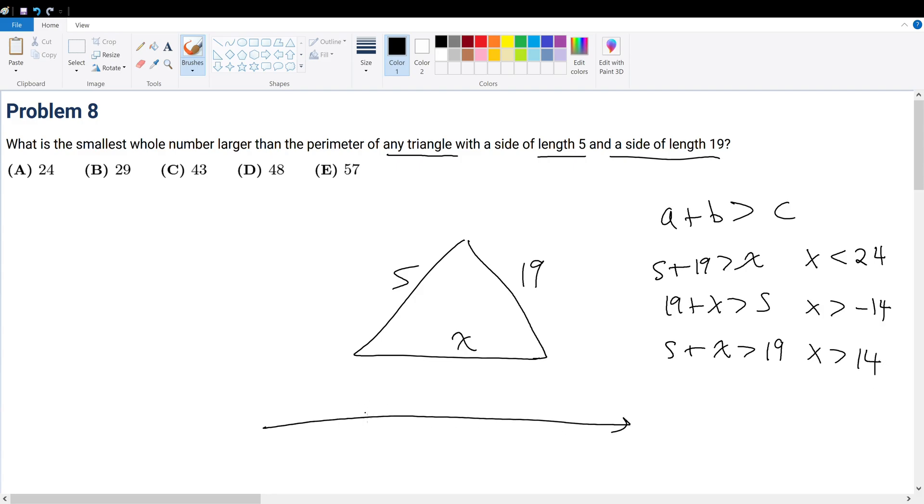So let's graph it out on a number line. We have negative 14 here, we have 14 here, and we have 24 here.